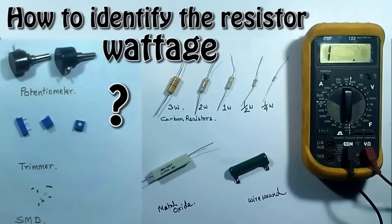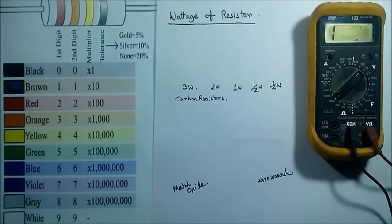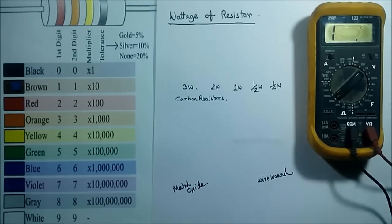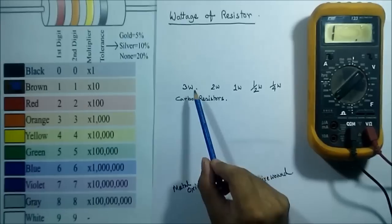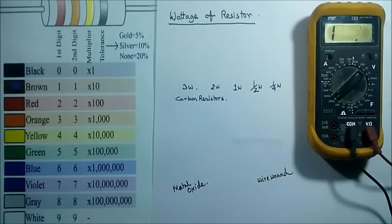Hello viewers, welcome to Tech Study Cell. In this video we will see how to identify the wattage of a resistor. The wattage is an important specification of a resistor. The resistance can be 1/4 watt, half watt, 1 watt, 2 watt, 3 watt, and above.